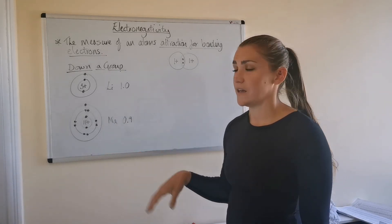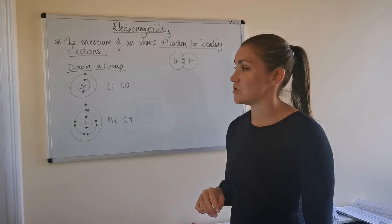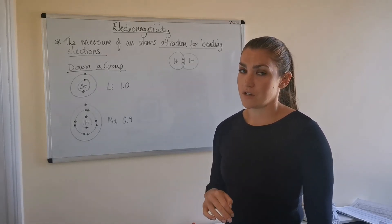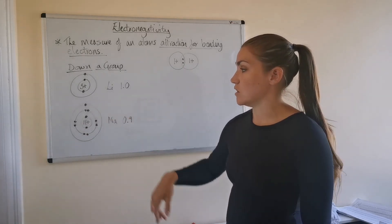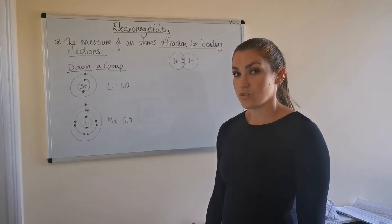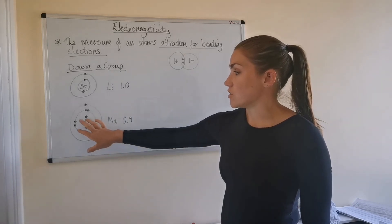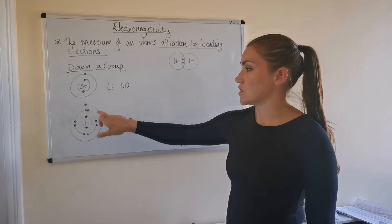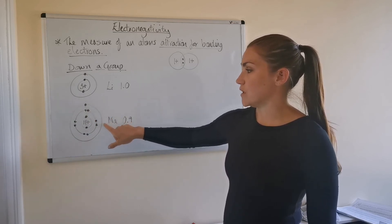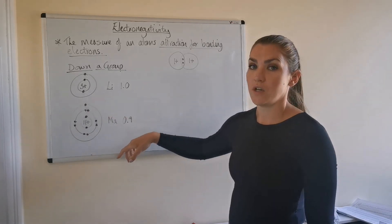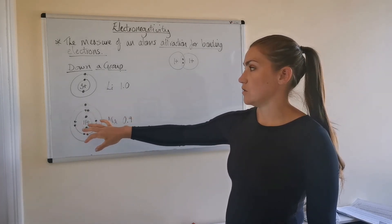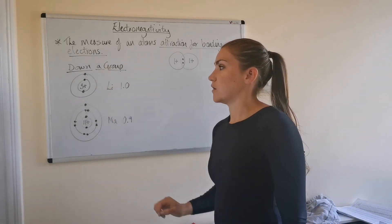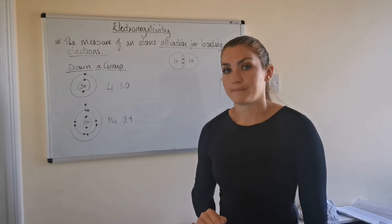Just like the explanation for ionization energy going down a group, the decrease in electronegativity is due to an increased shielding effect as a result of the increased number of occupied energy levels shielding the nuclear charge. Because there are all these layers of electrons in front of the nuclear charge in sodium, the bonding electrons in the outer shell are not experiencing as strong a nuclear charge as bonding electrons involved with the lithium atom.